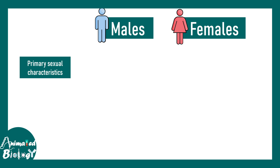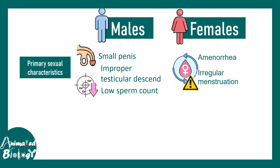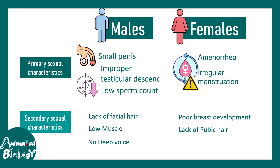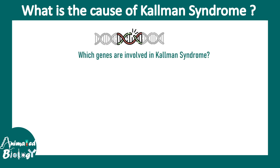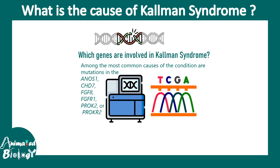To recap, primary sexual characteristics are affected in both sexes: males may have small penis, improper testicular descent, and low sperm count; females may have amenorrhea or irregular menstruation. Secondary sexual characteristics affected include lack of facial hair, low muscle tone, and no voice deepening in males, and poor breast development and lack of pubic hair in females. Regarding the genetic cause of Kallmann syndrome, next-generation sequencing has identified many gene mutations associated with it, though exactly which gene causes the problem is still not fully answered.